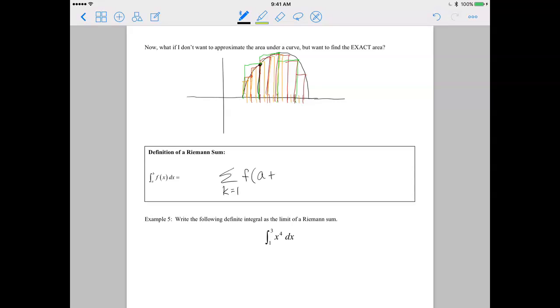So the areas of the rectangle are going to be the function values, because all of these heights are function values. And we're going to be plugging in a plus k delta x, and then the width of all of these rectangles is whatever delta x is. So we're going to multiply by delta x. Now, if I want to take infinitely many rectangles, we're going to put n right there, and then we're going to take the limit as n goes to infinity.